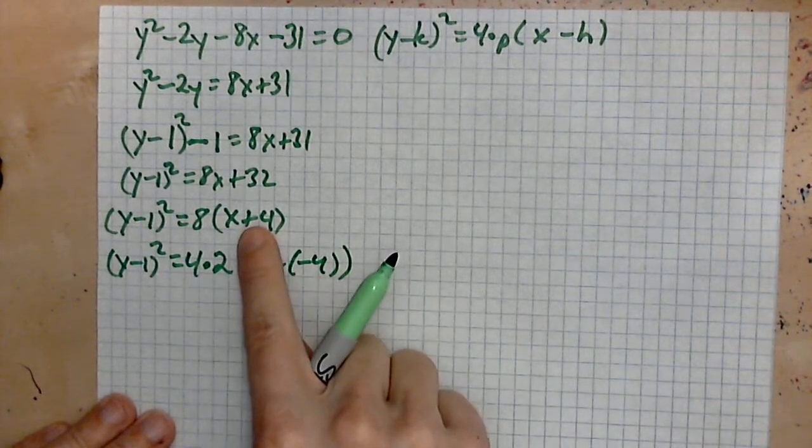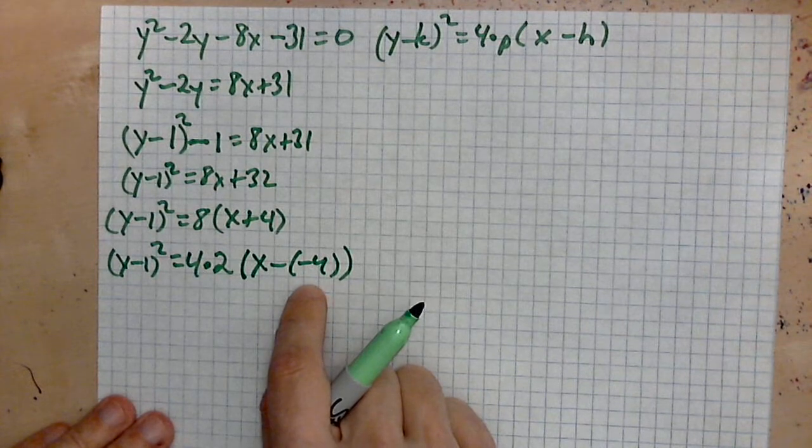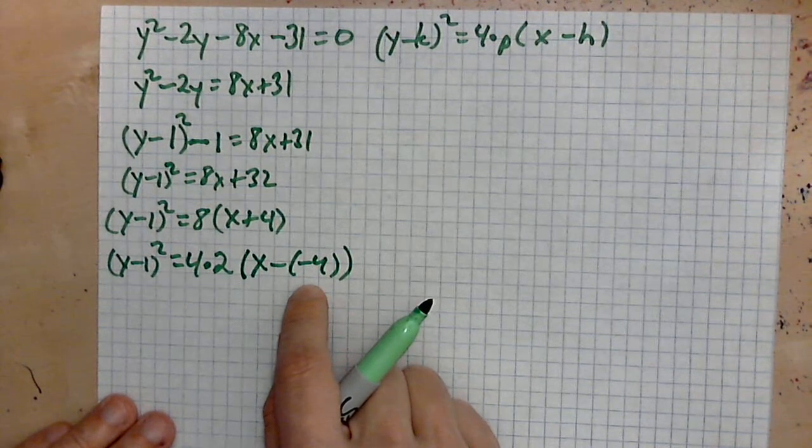Remember, two negatives give a positive, but writing it this way shows you the shift, so it's very useful to write it in that form.